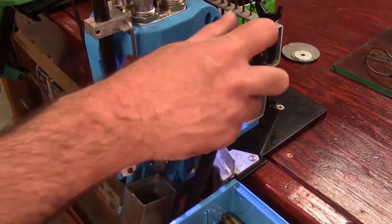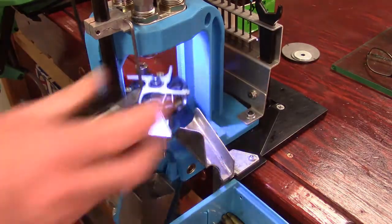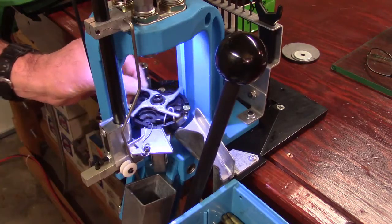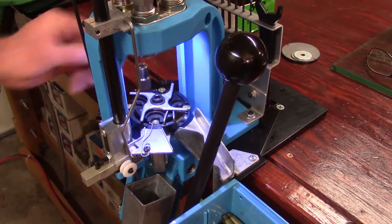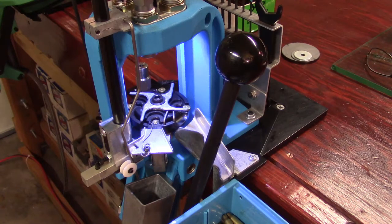You go all the way through seating, then crimp it. Now you've only run one case. You can simply eject it, take that case out, and inspect it over.